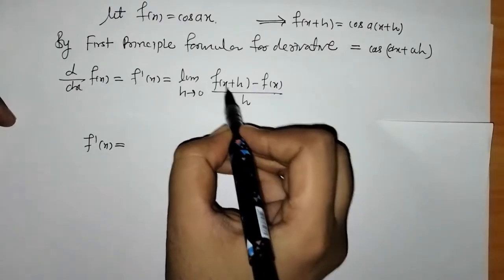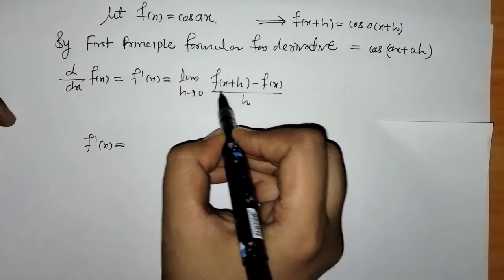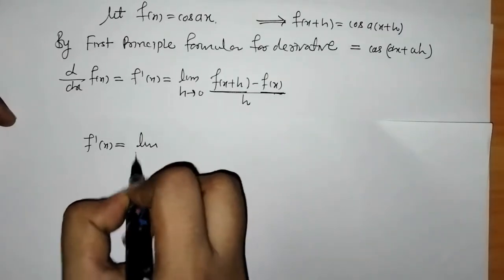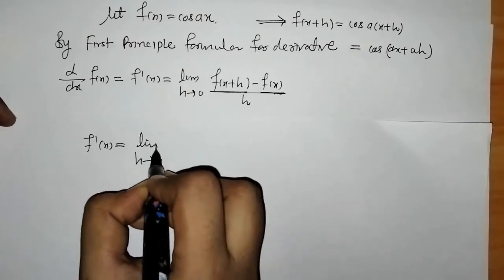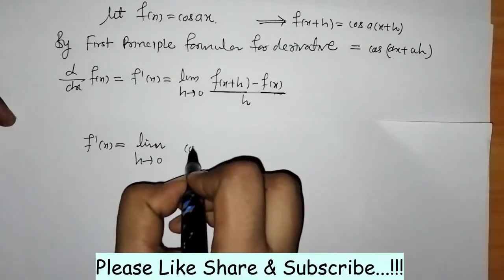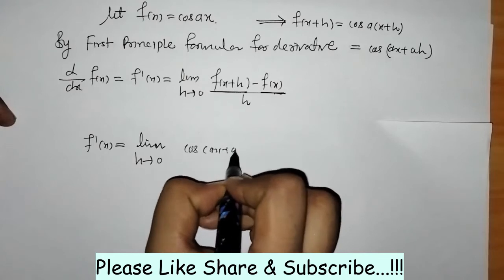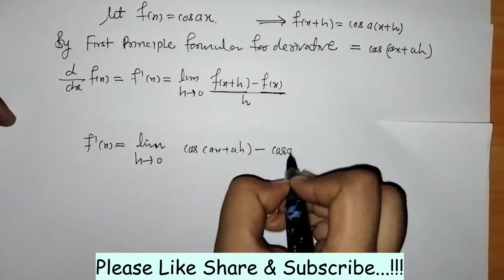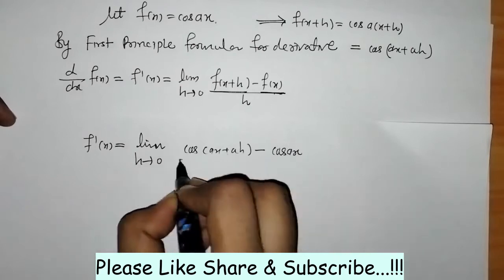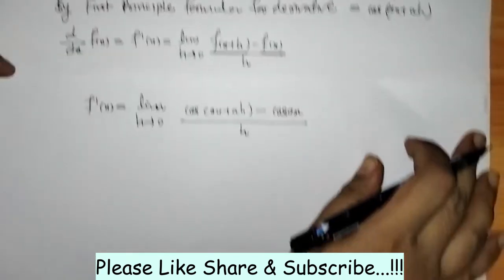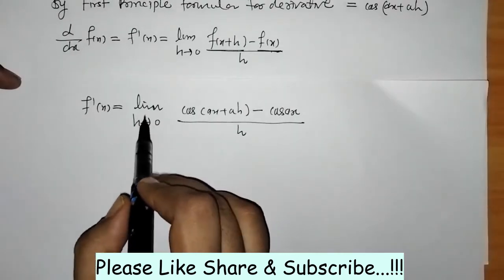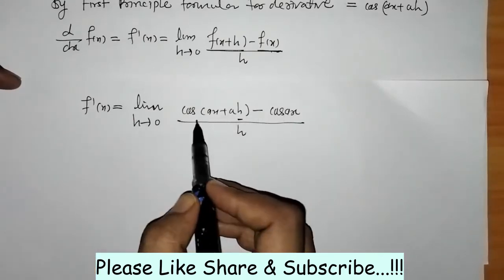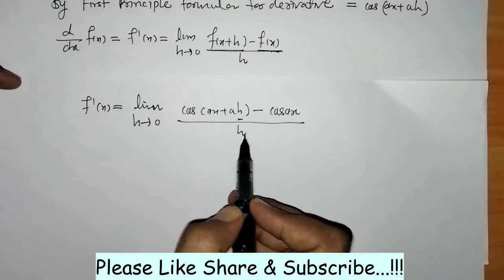Now we have to put f(x+h) and f(x) into the formula. So here we have: limit h tends to 0 of [cos(ax + ah) minus cos(ax)] upon h. We can check that when we put h = 0 we will get the 0/0 form.